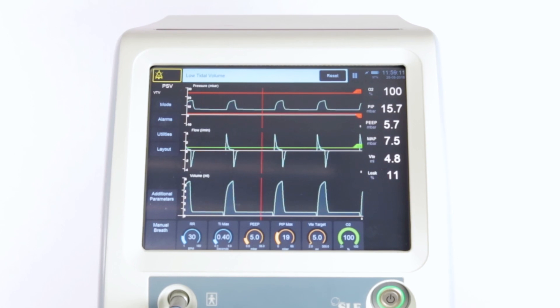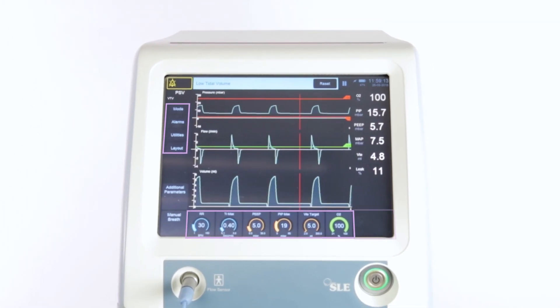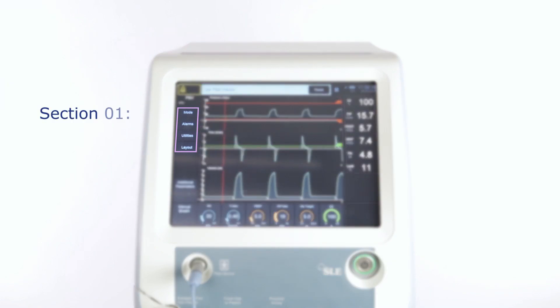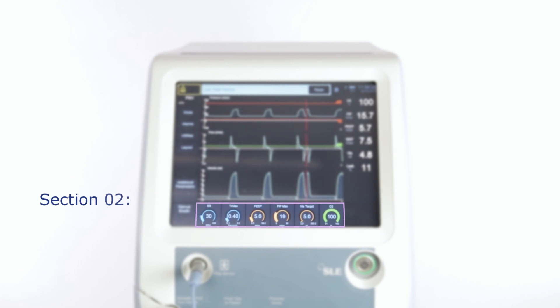The ventilator screen can be divided into six main areas, each with a distinct purpose. Section 1: Down the left hand side is for the main controls. Section 2: Along the bottom of the screen are the primary parameter settings, which will change depending upon the selected mode. Section 3: A blank area where adjustment and confirm controls appear when needed.